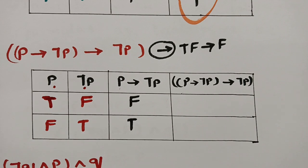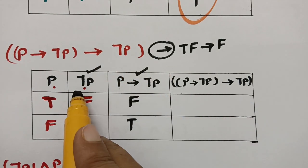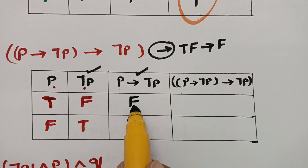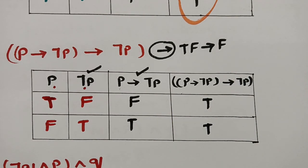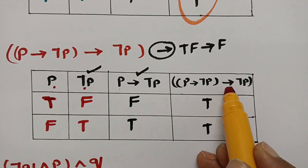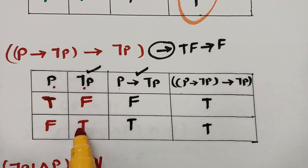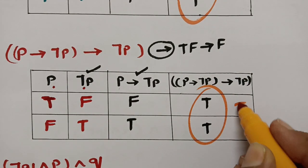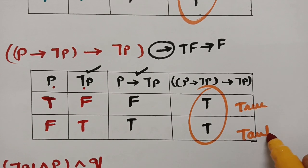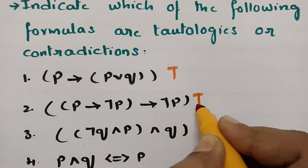Between the result and ¬P we apply implies again. We need a true followed by false — there is no such case here. So instead of writing false I write true. Since the compound proposition is always true, this is a tautology.